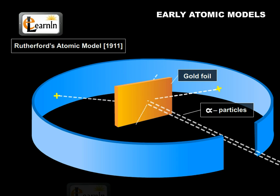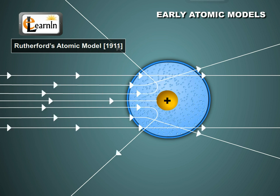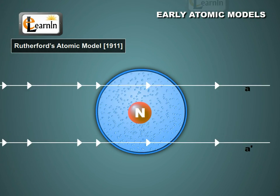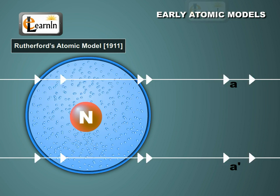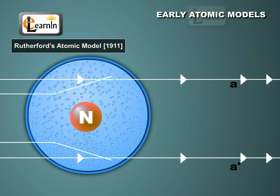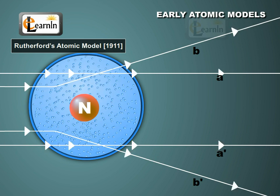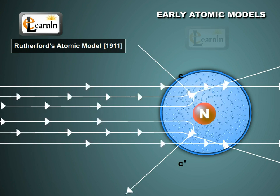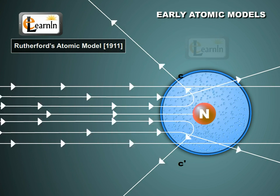Note that an alpha particle is a positively charged particle. Let's look at the behavior of these particles when they approach the interior of the atom. Rutherford observed that most of the alpha particles, like A and A-dash, pass through the atom undeflected. Some particles, like B and B-dash, get scattered by the atom at smaller angles of deflection. Particles like C and C-dash undergo large deflection at an angle less than 180 degrees but more than 90 degrees.